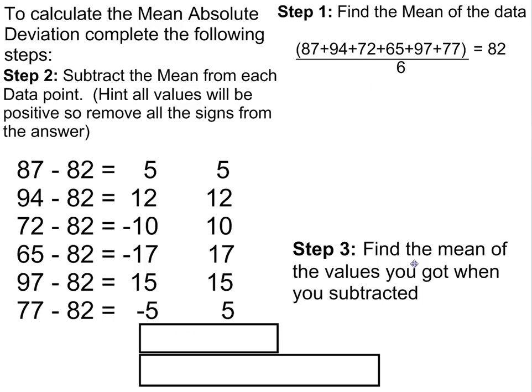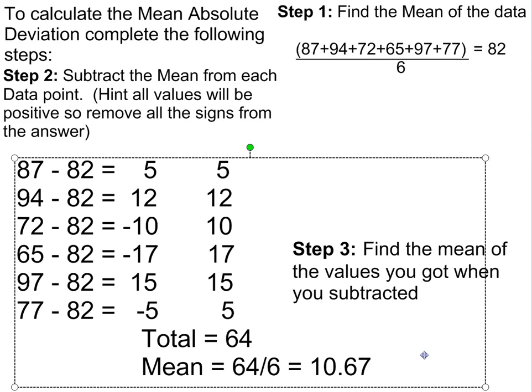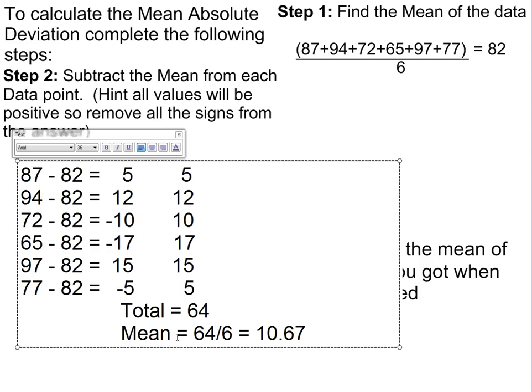The third step, which is the final thing, is to take those values and find the mean. So we're going to total those up and find the mean. In this case, the mean is 10.67. That is the mean absolute deviation.